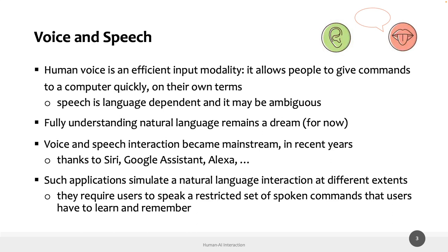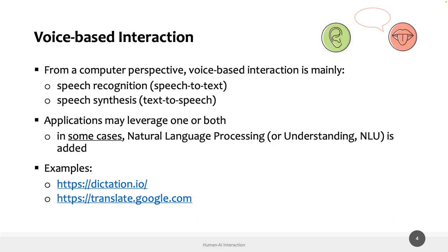You don't have visual affordances with a tool like Alexa, the Echo Dot, or Google Assistant. This is the main difference to take into account when designing a conversational system — you must learn commands before using the system. From a computer perspective, voice-based interaction is mainly composed of two tasks: speech recognition (speech to text), and speech synthesis (text to speech). You can have systems that use one or both of these tasks, and they are mixed in different kinds of conversational systems.